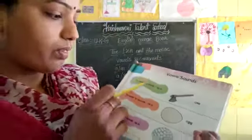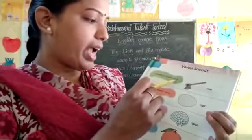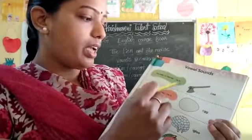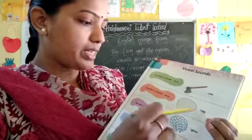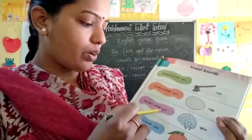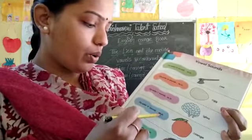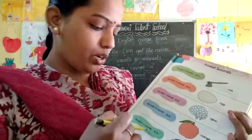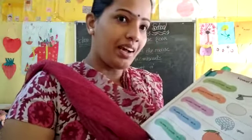Vowel sound means A, E, I, O, U are called vowel sounds. The letter A sound — A as in Apple. The letter E sound — E as in Egg. The letter I sound — I as in Igloo. The letter O sound — O as in Orange. The letter U sound — U as in Umbrella.